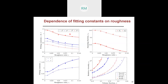The fitting constants versus roughness show that the fitting constants for viscosity and the second normal stress difference decrease as roughness increases. Similarly, the jamming fraction also decreases with increasing roughness. However, since we see a switching in the sign of the first normal stress difference, the fitting constant for the first normal stress difference actually increases and also switches sign as we increase the roughness.